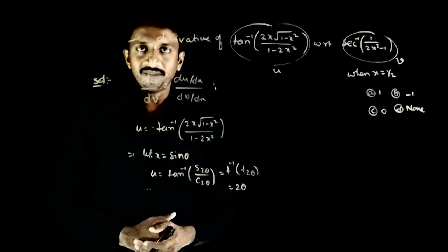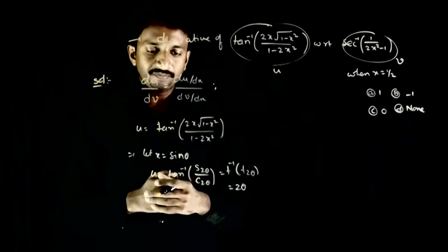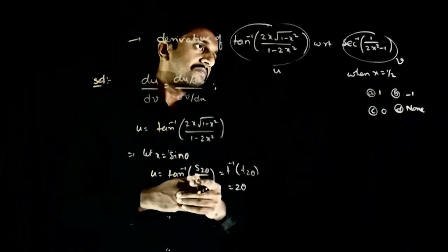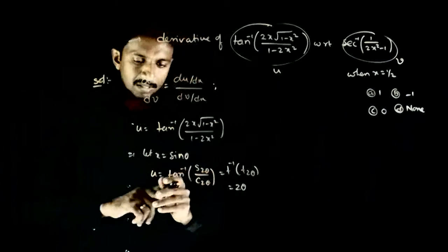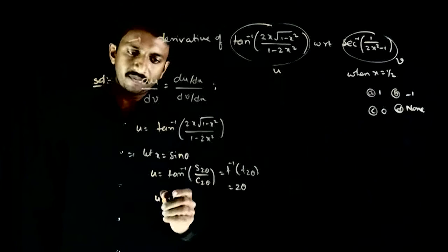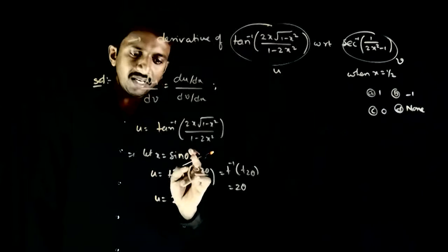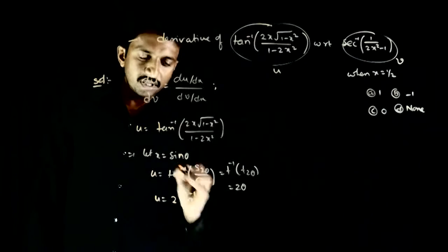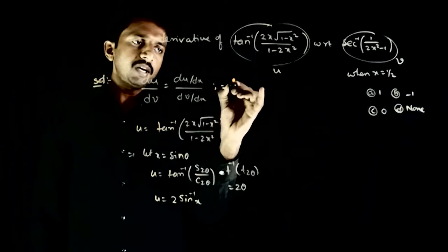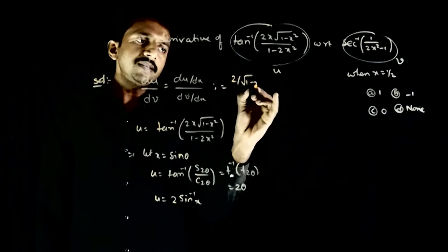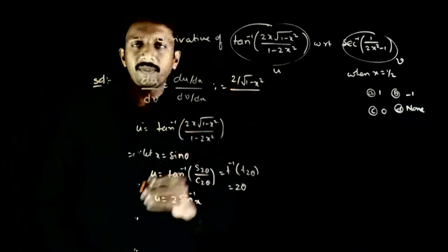So u is 2θ, and since x = sin θ, θ = sin⁻¹x. Therefore u = 2 sin⁻¹x. Differentiating with respect to x, du/dx = 2 divided by √(1-x²).